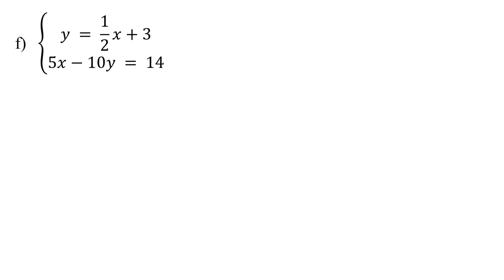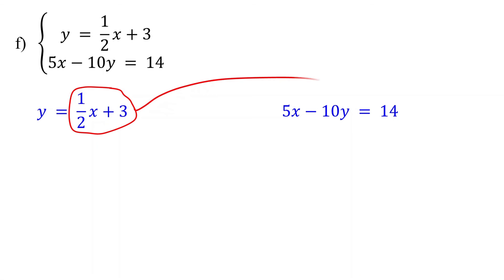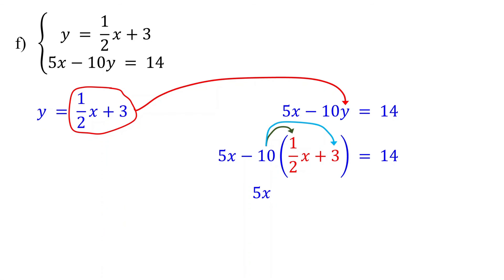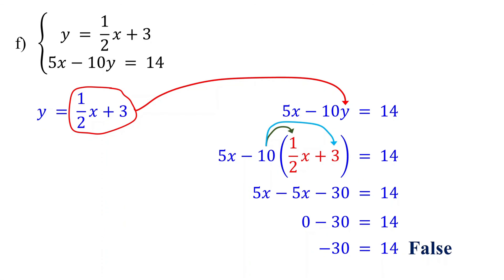Finally, let's consider the case where the system has no solution. The first equation is already solved for y, so substitute this expression directly into the second equation. Distributing negative 10: negative 10 times 1/2x equals negative 5x, and negative 10 times 3 is negative 30. Combining like terms gives 0, so we have negative 30 equals 14, which is false. This indicates the system has no solution — there is no ordered pair satisfying both equations simultaneously. The lines are parallel and do not intersect. When you end up with numbers not equal to each other, the answer is no solution.